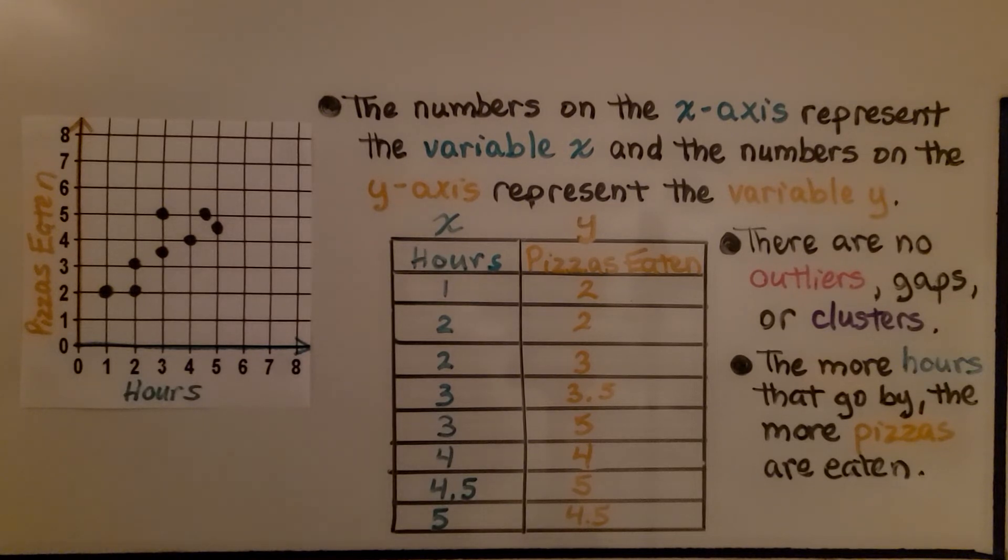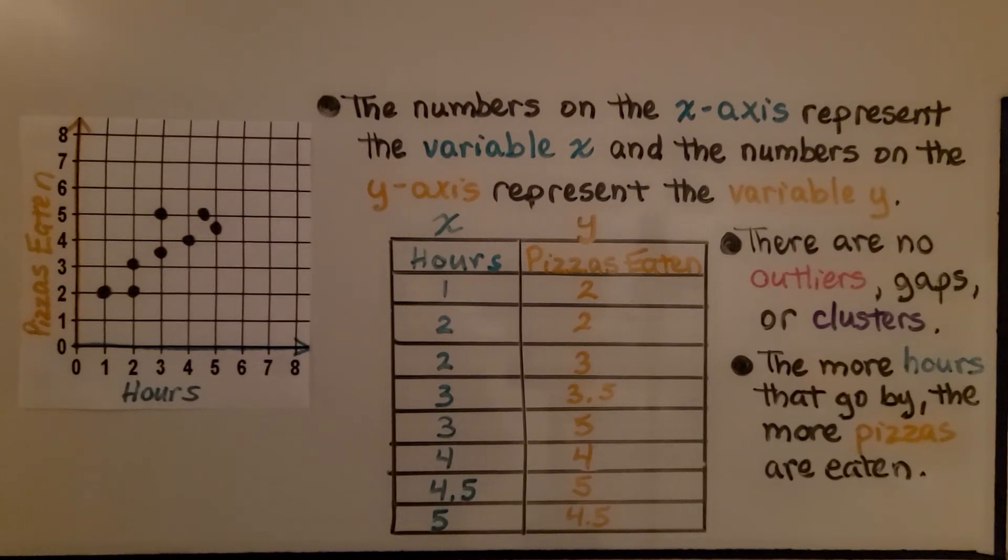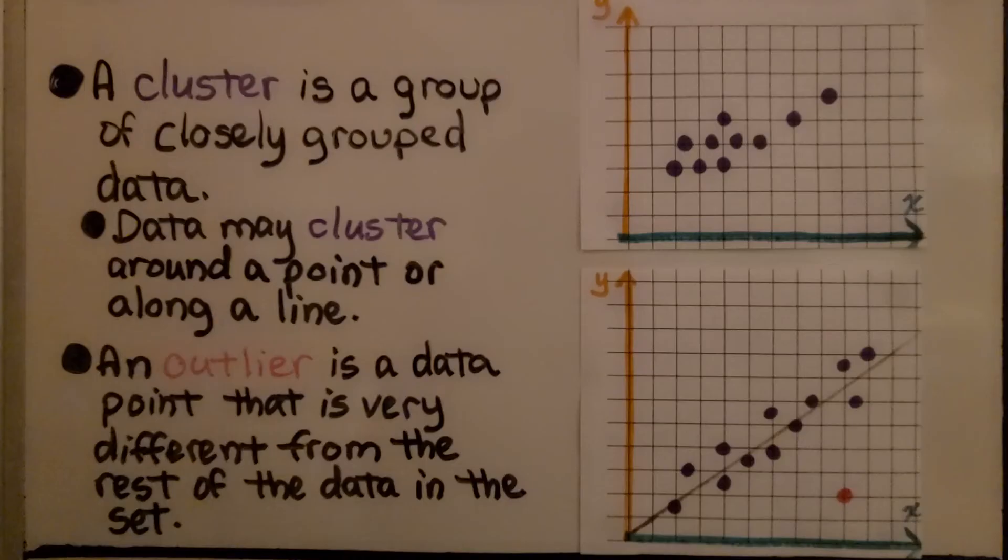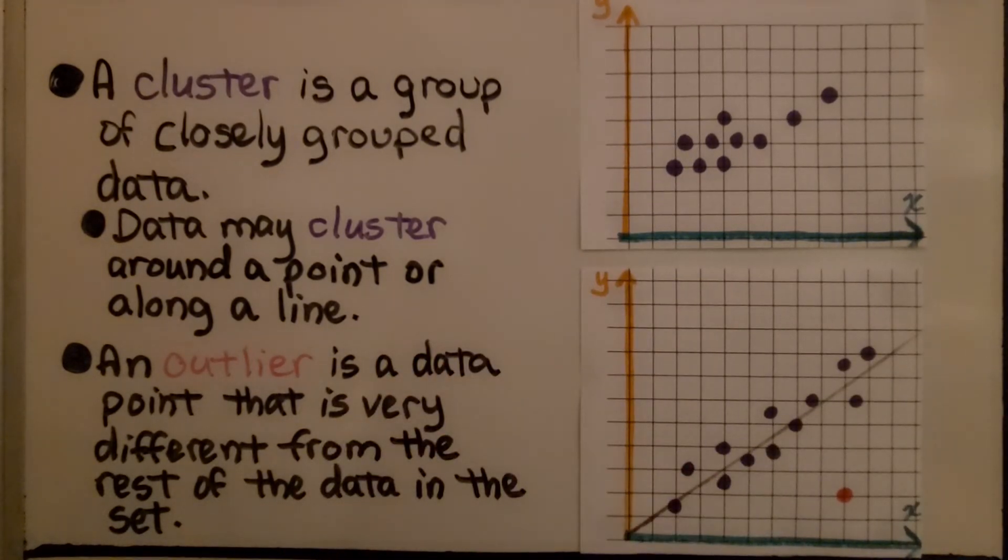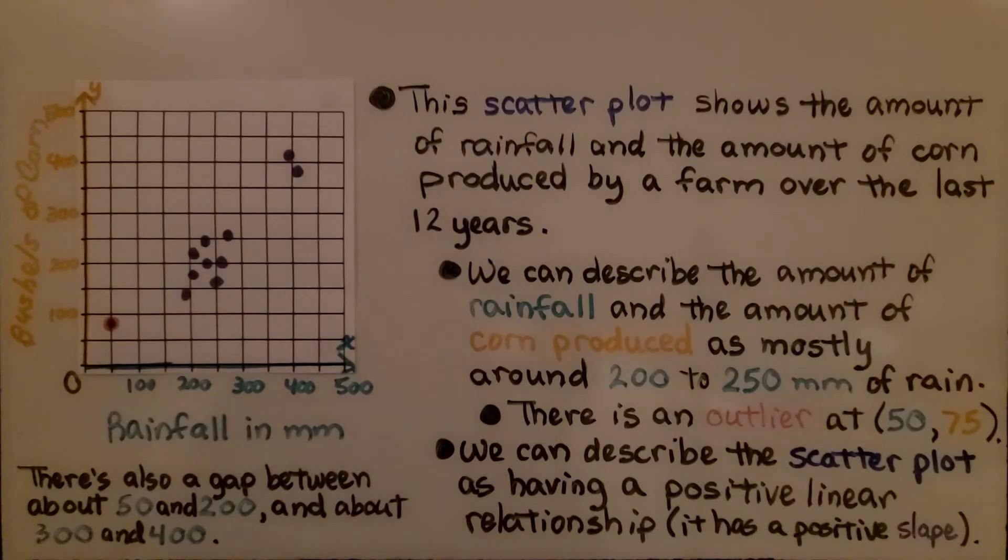And remember, a scatter plot may not have outliers or clusters. And the data may cluster around a point or along a line. We don't connect the points on a scatter plot with a line. It just shows the data that was collected.